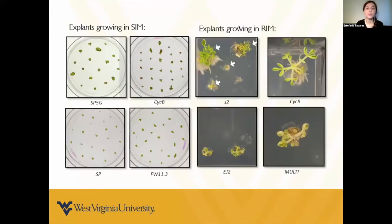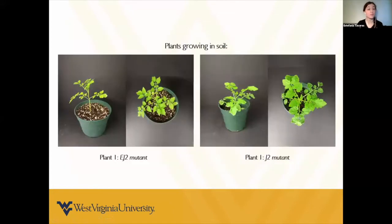Using transformation by Agrobacterium tumefaciens, we are using cells from cotyledons. These plants are first promoted for shoot development, then root development. Then we transfer them to soil conditions and acclimatize the plants before transferring them to the greenhouse facilities. Here I am showing two of the mutant lines that we already have growing.